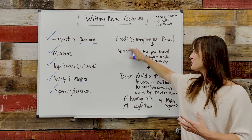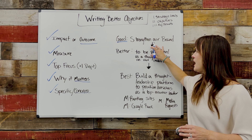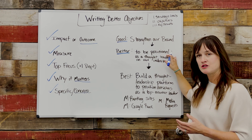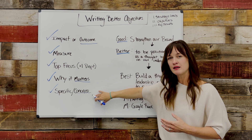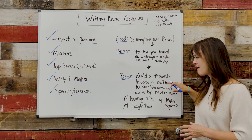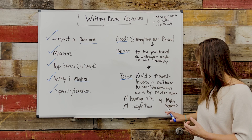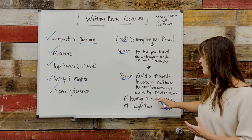Let's look at a couple examples using good, better, best. A good objective might be: strengthen our brand. That's okay, it's not terrible. Adding to it to make it better: strengthen our brand to be positioned as a thought leader in our industry — we're getting a little bit of the why and getting more concrete. How about something even better and more measurable: build a thought leadership platform to position ourselves as a top market leader. We're going to measure that by ranking sites, our rank in Google, media requests — there are a lot of ways to measure that.